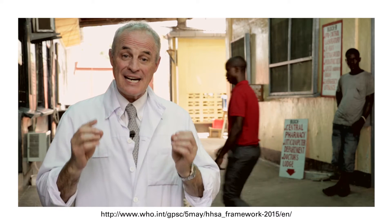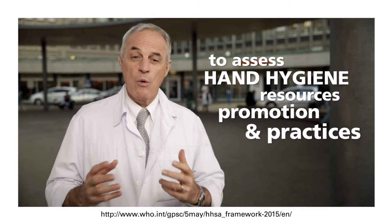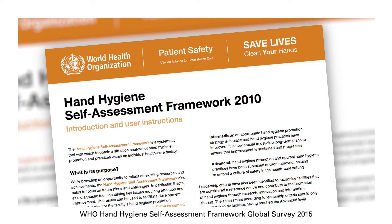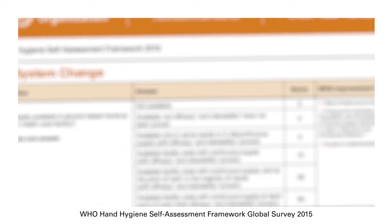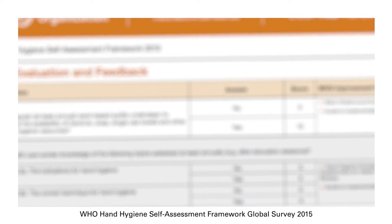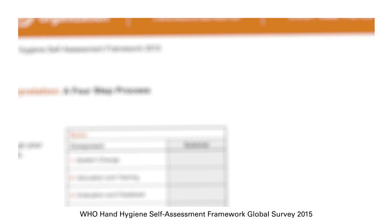Today we are inviting all healthcare facilities worldwide to assess their data online as part of the second WHO global survey to assess hand hygiene resources, promotion and practices worldwide. The concept is very simple — it is a monitoring tool in the form of a scoring system whereby you can score your institution by yourself, obtaining a situation analysis according to a set of 27 indicators.